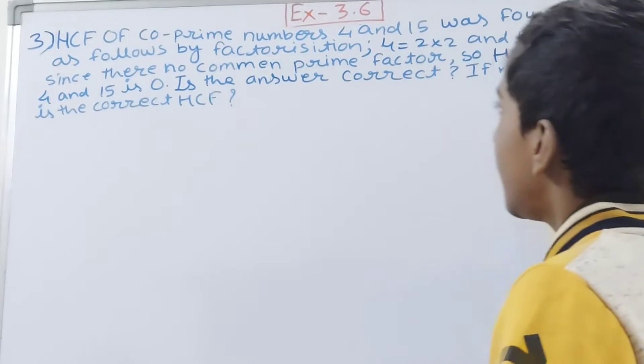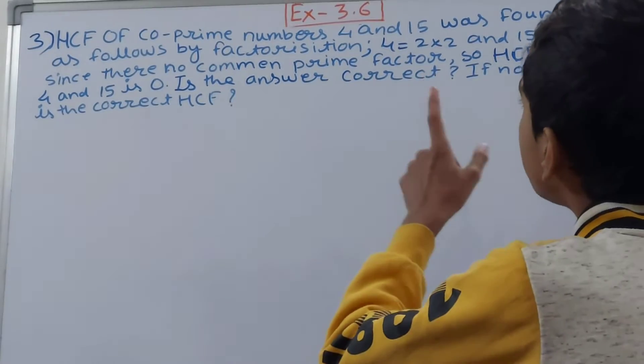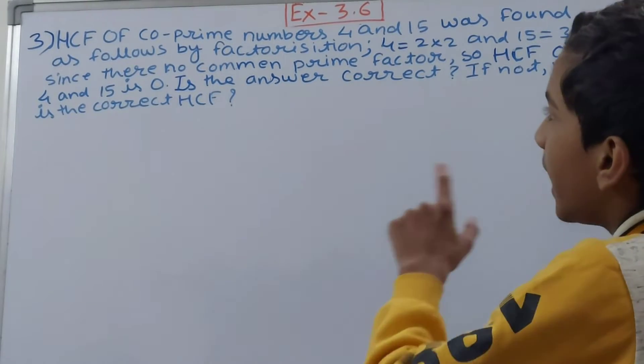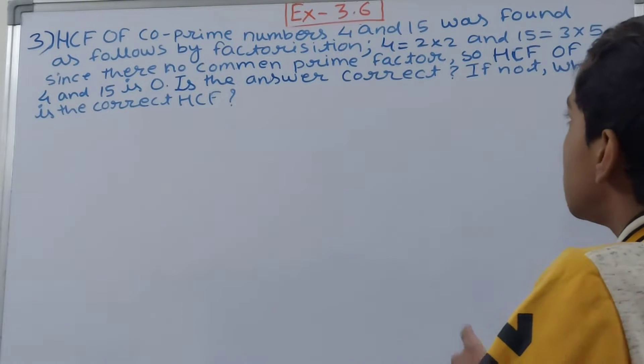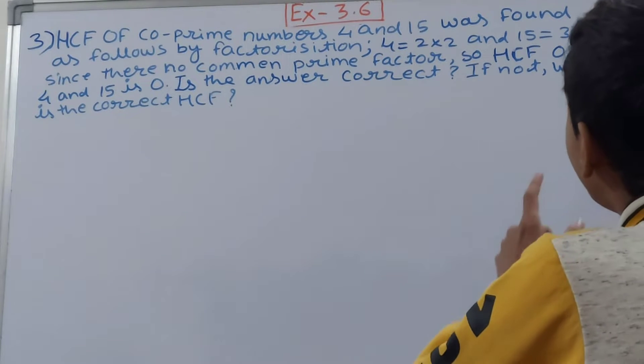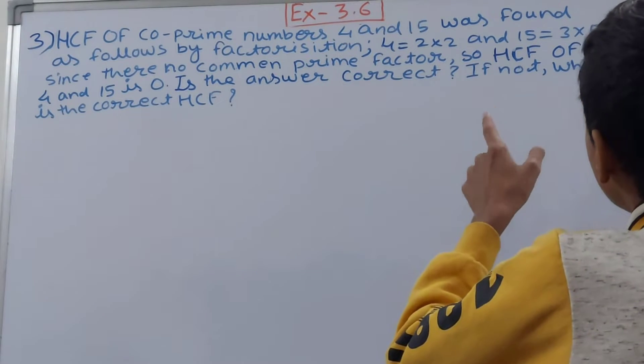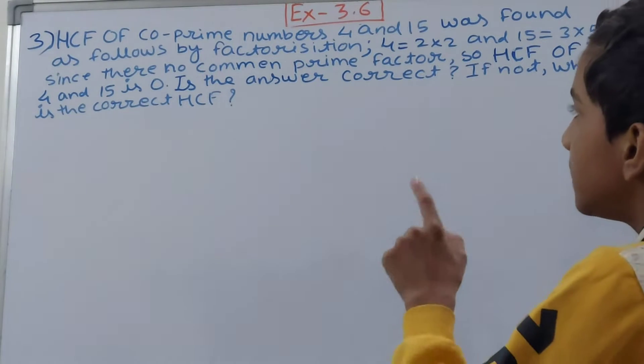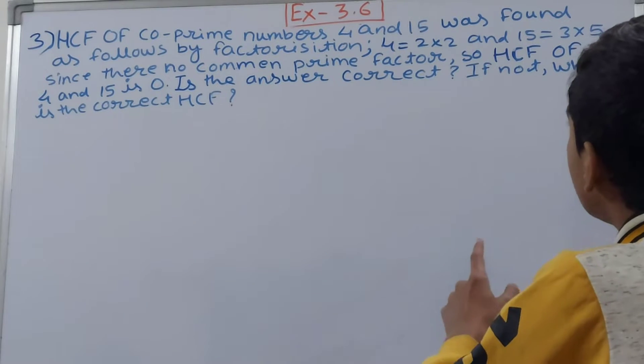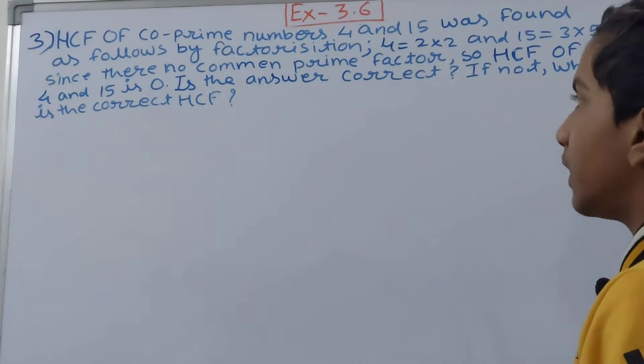So this is: HCF of co-prime numbers 4 and 15 was found as follows by factorization: 4 is equal to 2 into 2 and 15 is equal to 3 into 5. Since there is no common prime factor, so HCF of 4 and 15 is 0. Is this answer correct? If not, what is the correct HCF?